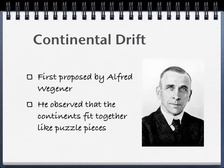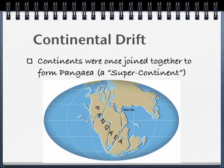Alfred Wegener was a German scientist and Arctic explorer who suggested the concept of continental drift. Continental drift is the idea that the continents move around on Earth's surface. In the early 1900s, Wegener hypothesized that the continents were once connected, and when connected, these continents formed a supercontinent called Pangaea.